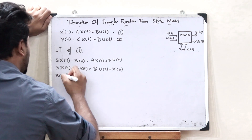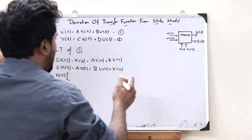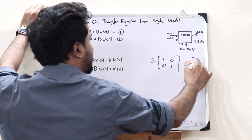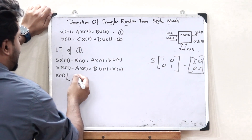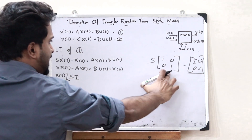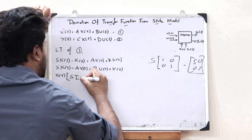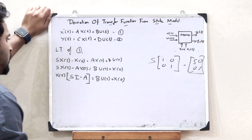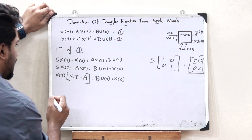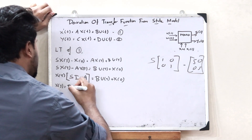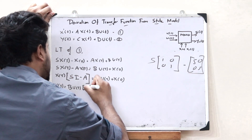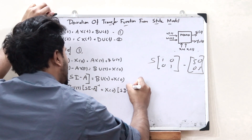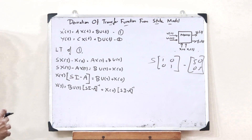Taking X(s) common — because all these are matrices, s must be multiplied with the identity matrix I, which is [1, 0; 0, 1], so s·I becomes [s, 0; 0, s]. We write X(s) into (s·I minus A) equals B·U(s) plus x(0). So the value of X(s) is simply (sI minus A) inverse times B·U(s), plus (sI minus A) inverse times x(0). This is the value of X(s).